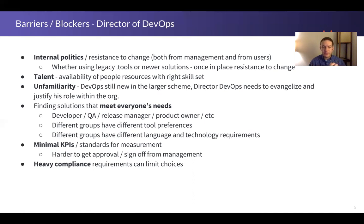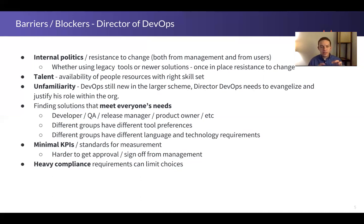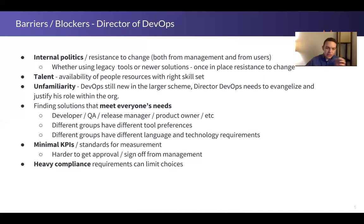A huge blocker and pain point for a director of DevOps can be meeting everyone's needs. They're tasked with owning the delivery pipeline, and this needs to meet everybody's needs across the org. Different groups can have different preferences for tools or just different needs depending on the programming language they use or the technology requirements they have. If they have a tool that supports deployment, code quality, and testing for their particular set of technologies, they're very apt to stick with that and not adopt a new tool unless it supports all those requirements — not just for their team, but across the org.